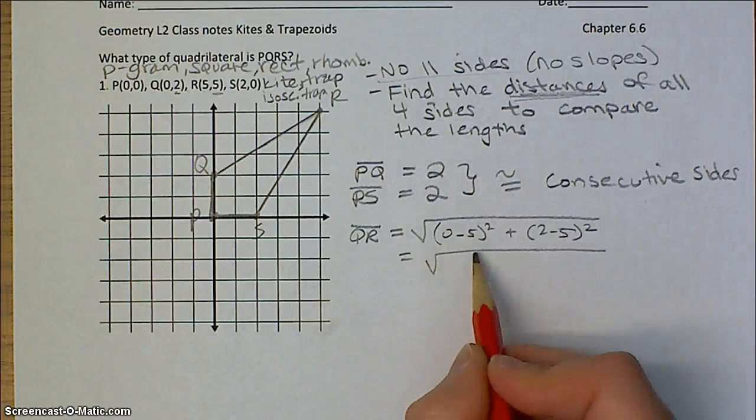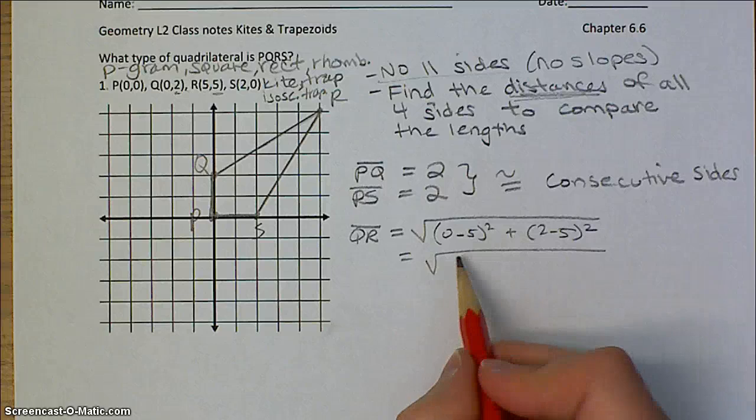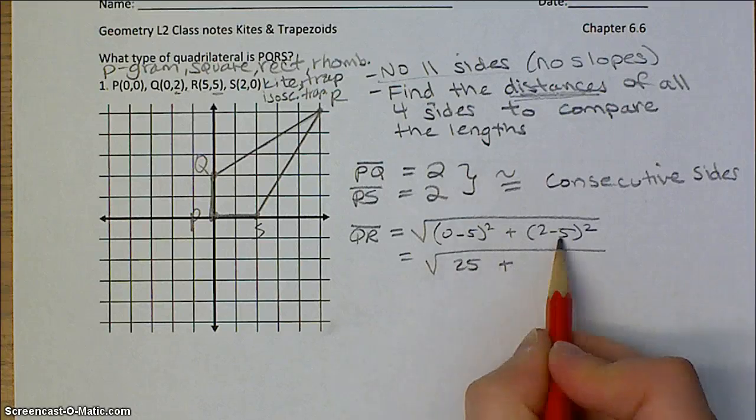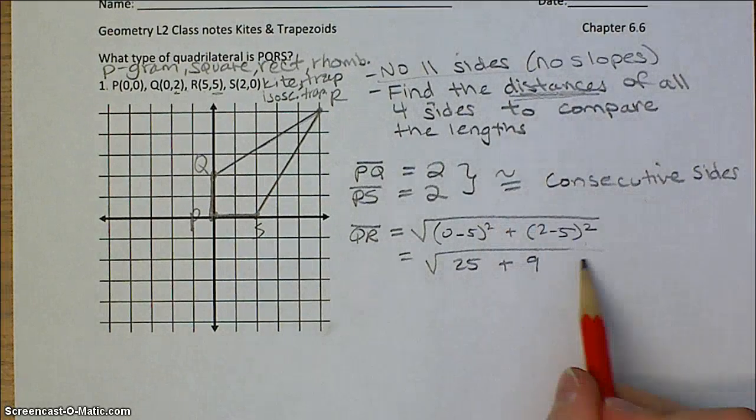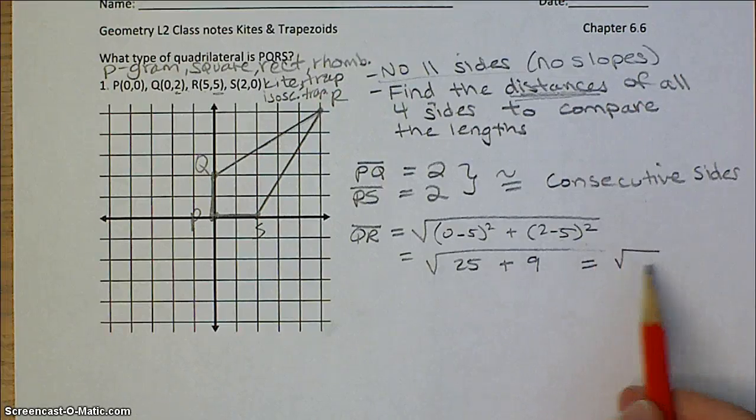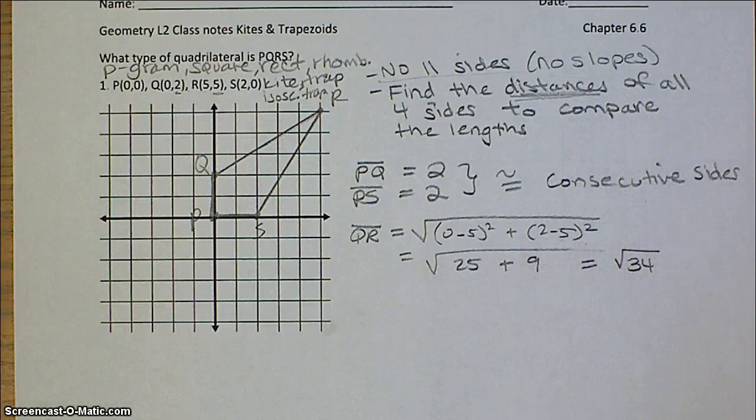So this is going to be negative 5 squared, which is 25. This one's going to be negative 3 squared, which is 9, which is going to simplify to square root of 34.